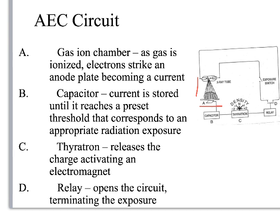There's something called the thyratron — that's the fancy name for the density control. When you're hitting plus one or plus two, you're controlling the thyratron, which sets limits on what the capacitor is doing. Just know: ion chamber collects charge, charge is communicated to the capacitor, when the capacitor overflows it breaks the relay and breaks the circuit. If I'm messing with the density controls, I'm messing with the thyratron, which controls how much electricity moves out of the capacitor.